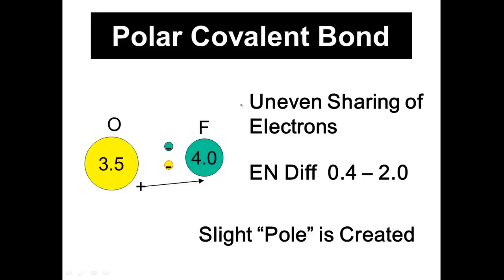A polar covalent bond deals with the uneven sharing of electrons. In this case, it's oxygen and fluorine sharing electrons. The electrons are going to migrate or be pulled towards the more electronegative element. Oxygen has an electronegativity value of 3.5. When I subtract 4.0 minus 3.5, I end up with a difference of 0.5, which falls between 0.4 and 2.0 — that is the range for a polar covalent bond, and a slight plus and minus will be created.